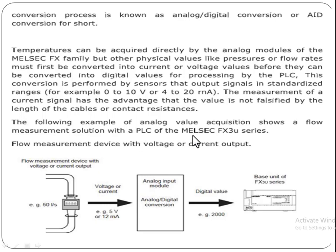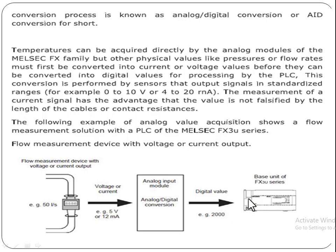The following example of analog value acquisition shows a flow measurement solution with a PLC of the Mitsubishi FX3U series. A flow measurement device with voltage or current output is used — here a sensor converts the flow into a voltage or current signal, which is then transferred to the analog input module. The analog input module converts this into a digital value, for example 2000, which is then sent to the base unit of the FX3U series Mitsubishi PLC.